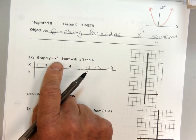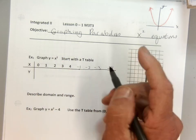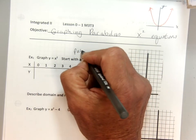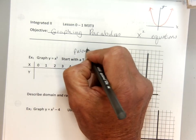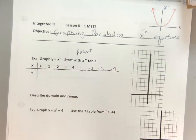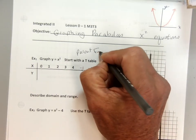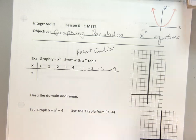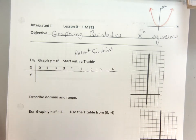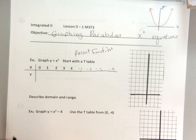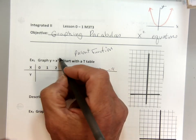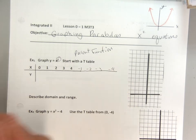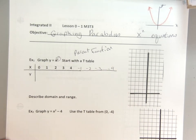Y equals X squared. When we graph this, this will be our parent function, which is our basic function. This will be the main one that we will then move, change, do all sorts of things with. But the main one starts here. So this is X squared.